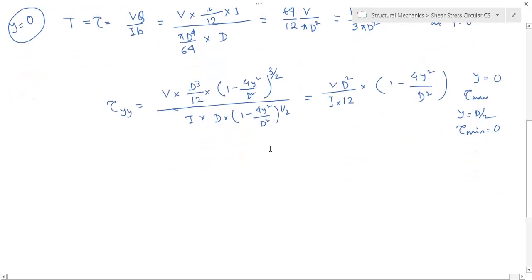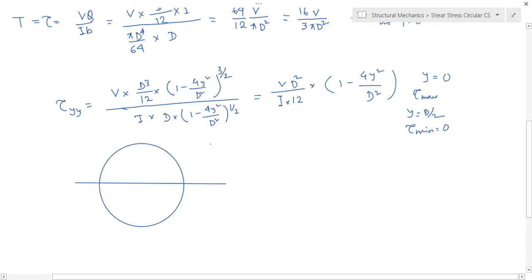And along y, this tau varies quadratically with y. So the distribution will be like this.